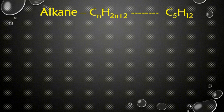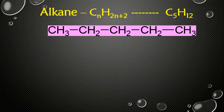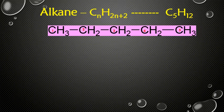Let's take alkanes. They have the common molecular formula CnH(2n+2). If we take a molecule with five carbon atoms, the molecular formula will be C5H12. If we draw a simple alkane with this formula and number the main carbon chain as 1, 2, 3, 4, and 5, the length of this carbon chain is 5, so the name of this molecule is pentane.